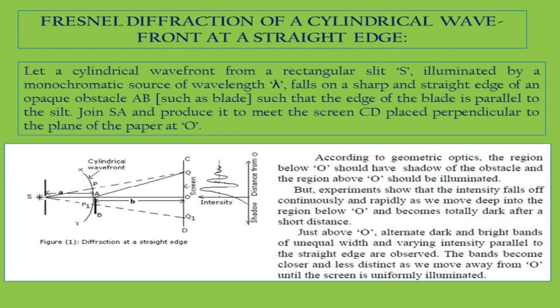These are the similarities and dissimilarities between a zone plate and a convex lens. Now let me explain why a zone plate has multiple foci. The formula for focal length is F = Rn²/(N·lambda), where R1 is the radius of the first aperture. If we slide the screen towards the aperture, the size of the half period zone will decrease.